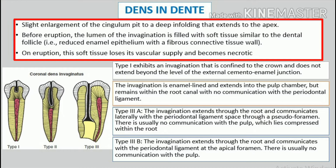Involvement of deciduous teeth has been reported but is uncommon. A strong maxillary predominance is seen. The depth of the invagination varies from a slight enlargement of the cingulum pit to a deep enfolding that extends to the apex. Before eruption, the lumen of the invagination is filled with soft tissue similar to the dental follicle, i.e., reduced enamel epithelium with a fibrous connective tissue wall.